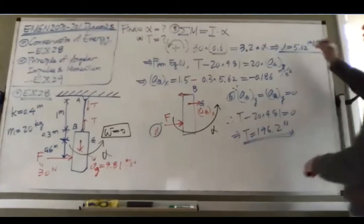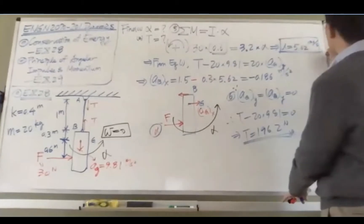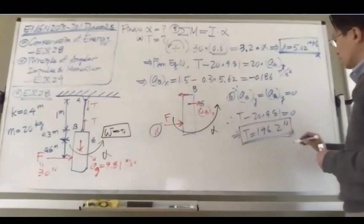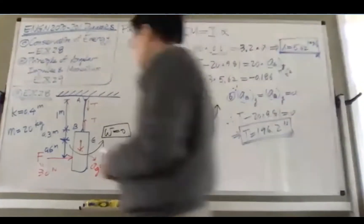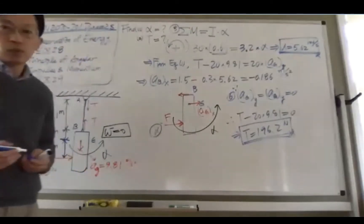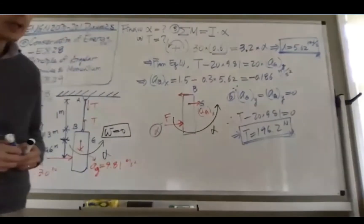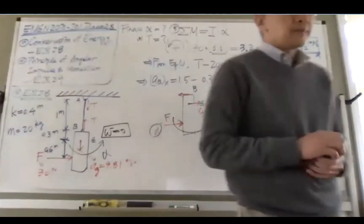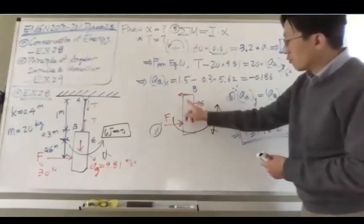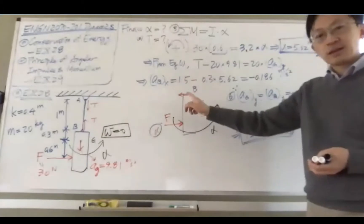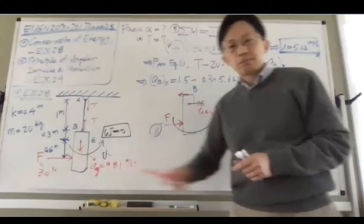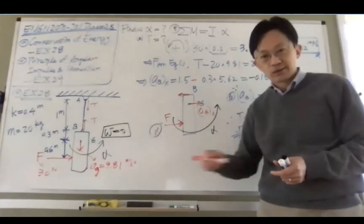So for this problem we found the angular acceleration to be 5.62 and the tension developed in the force is 196.2 newtons. Now remember one thing, we have no vertical displacement simply because the force is applied perfectly horizontal.